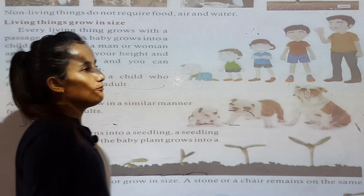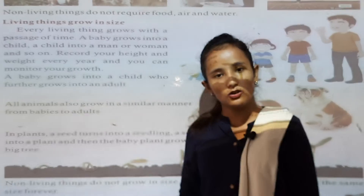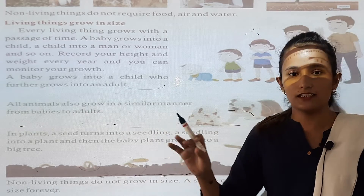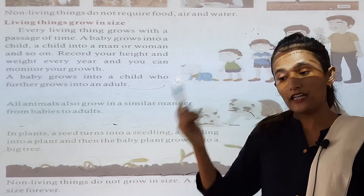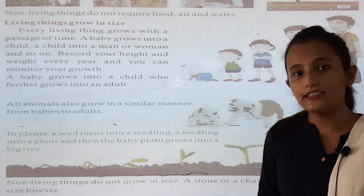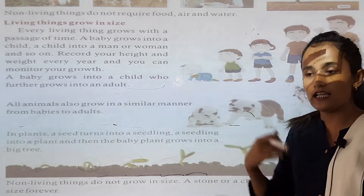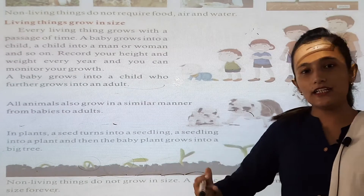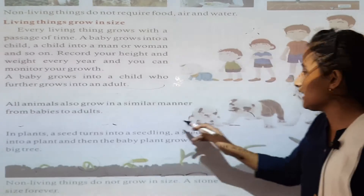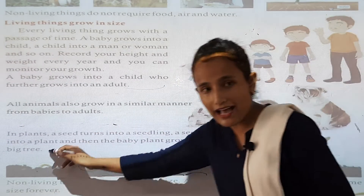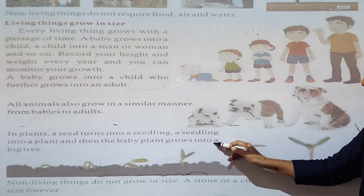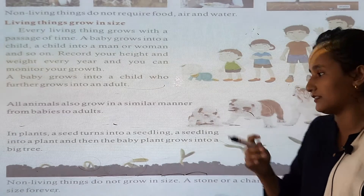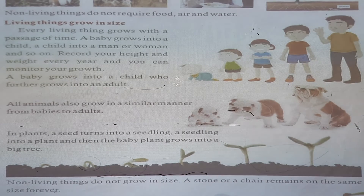For example, when you plant seeds at home, next year you can see that plants are growing day by day. Just as your size grows, plants also grow day by day. A seedling grows into a plant, and a baby plant grows into a big tree.